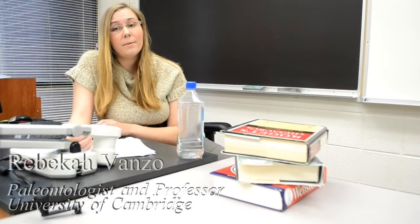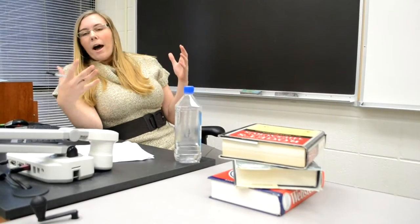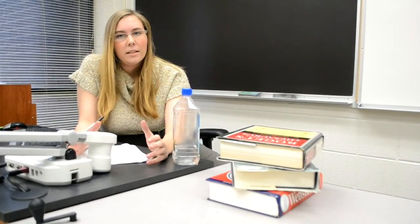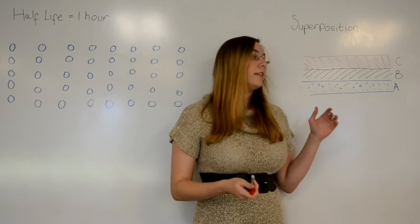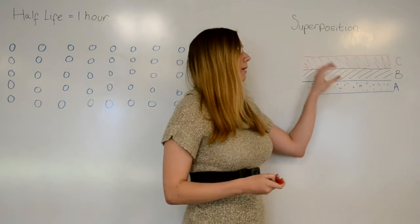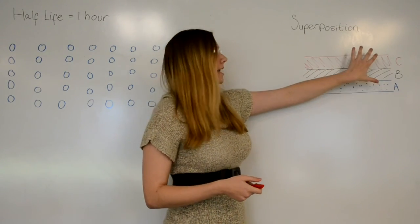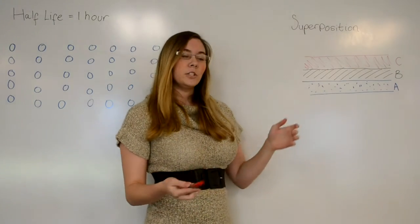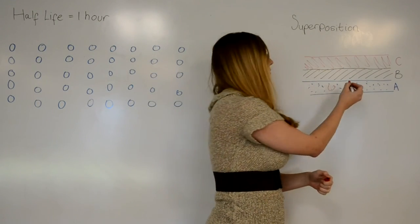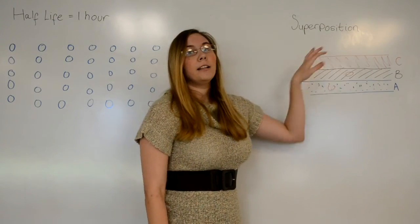The age of a fossil can be determined in two ways with modern science: relative dating and absolute dating. Relative dating does not give an exact numerical age of the fossil, but rather how old it is in comparison to the rocks and fossils found in the same area. We base relative dating on the law of superposition — the idea that old material is deeper in the ground and new material builds on top of it. So a fossil found in a deeper rock layer is older than one found in a layer above it.